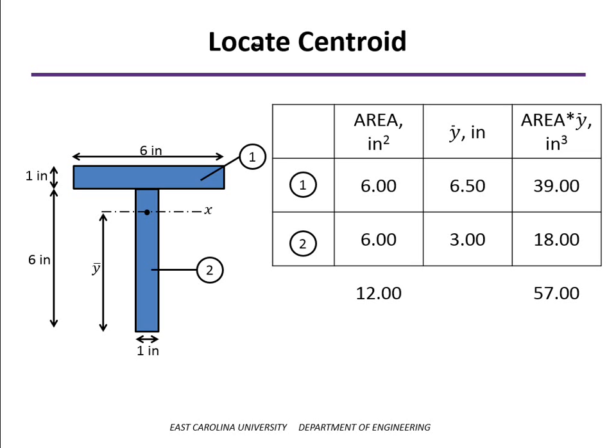The y bar of the section is the sum of the area times y bars, the 57 cubic inches, divided by the total area, 12 square inches. So the centroid is located at 4.75 inches above the bottom of the section.